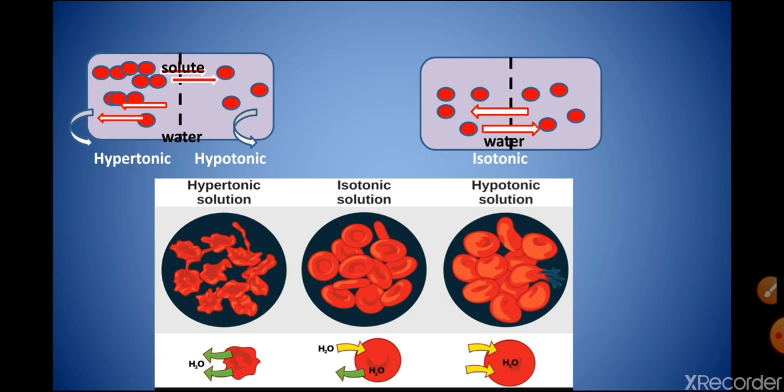The third diagram shows an example of RBCs kept in different solutions. First, the RBC is kept in a hypertonic solution. The fluid inside the RBC is hypotonic, the RBC membrane acts as the semi-permeable membrane, and the outside solution is hypertonic. So hypotonic fluid inside the RBC is separated from the hypertonic solution by the semi-permeable membrane. When kept in a hypertonic solution, water automatically moves from the hypotonic fluid of the RBC to the hypertonic solution.